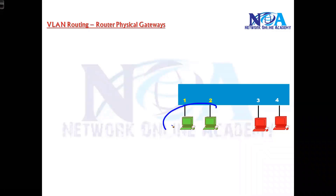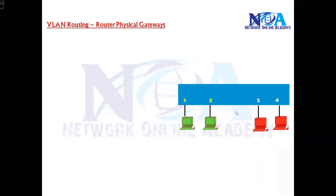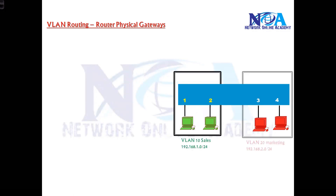Let's take an example. I have two WLANs — WLAN 10 and WLAN 20. In production scenarios you may have more, but I'm using two to keep things simple. We assume these two WLANs are already pre-configured, where ports 1 and 2 are assigned to WLAN 10 and ports 3 and 4 are assigned to WLAN 20.